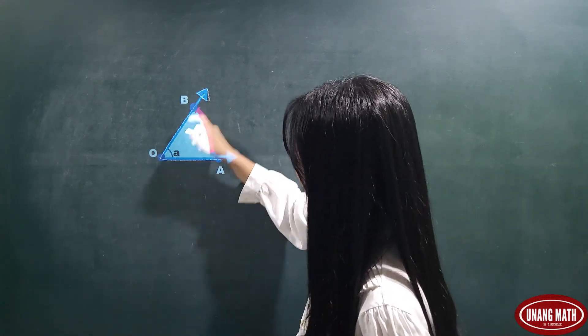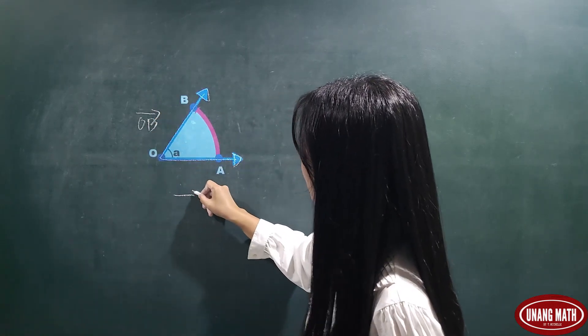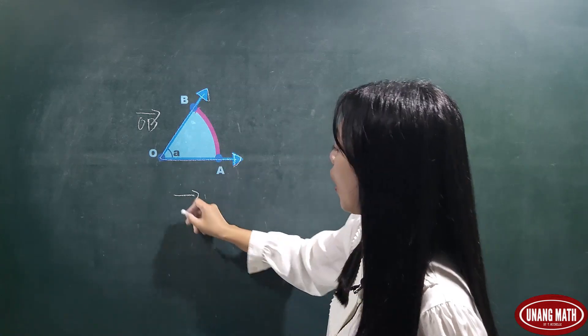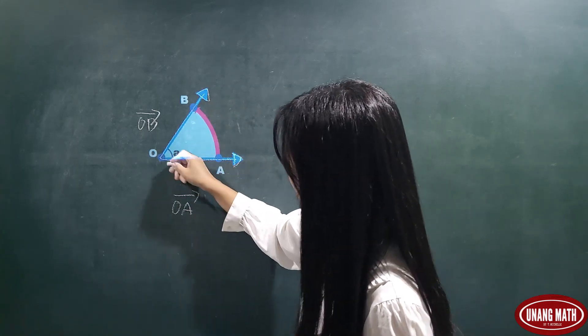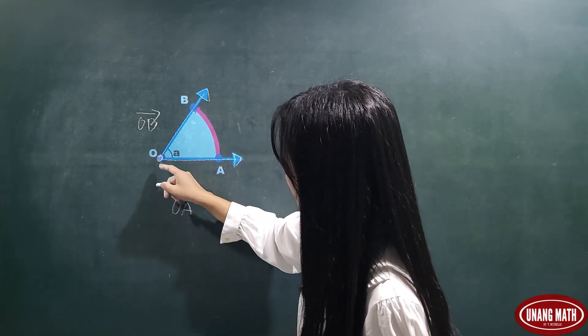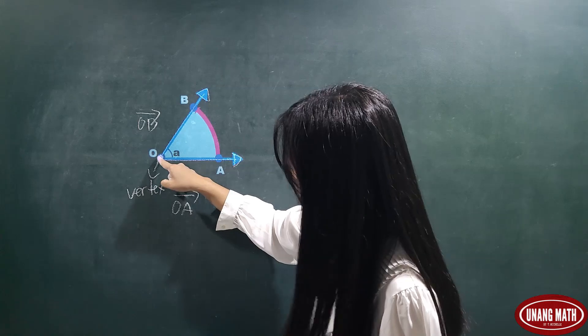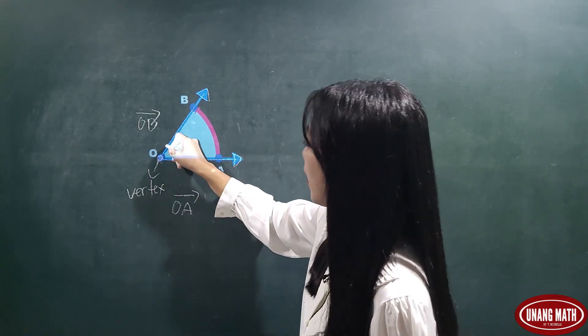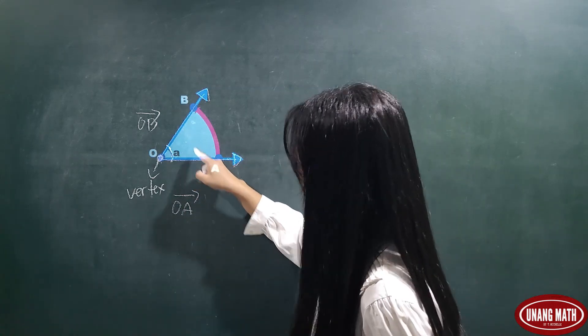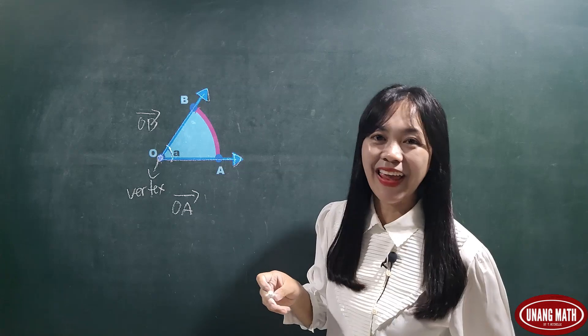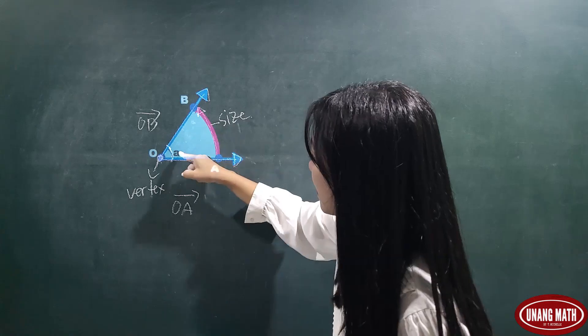Let's name the first ray as ray OB. Second ray as ray OA. Okay, when these two rays intersect or meet at this common endpoint, so this is the vertex, when these two rays meet at the vertex, this angle is formed. And this is the space between these two intersecting lines. This arrow refers to the size of this angle.